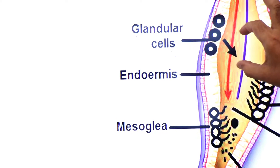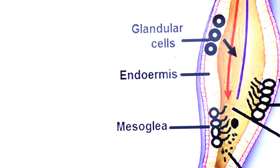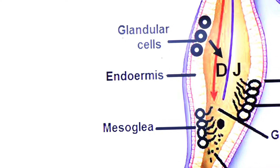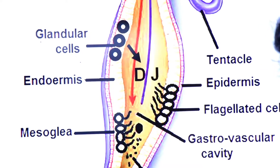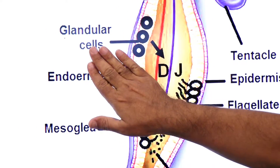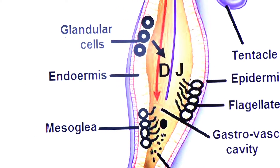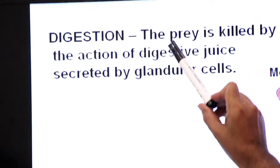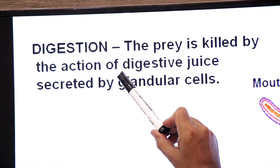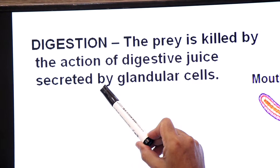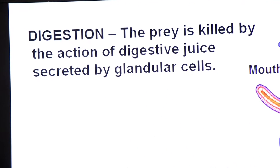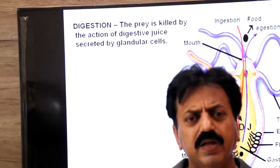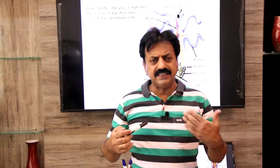Glandular cells secrete digestive juice into this cavity. DG stands for digestive juice. The prey is killed by the action of digestive juice secreted by glandular cells. So the glandular cells release digestive juice, which kills the prey.